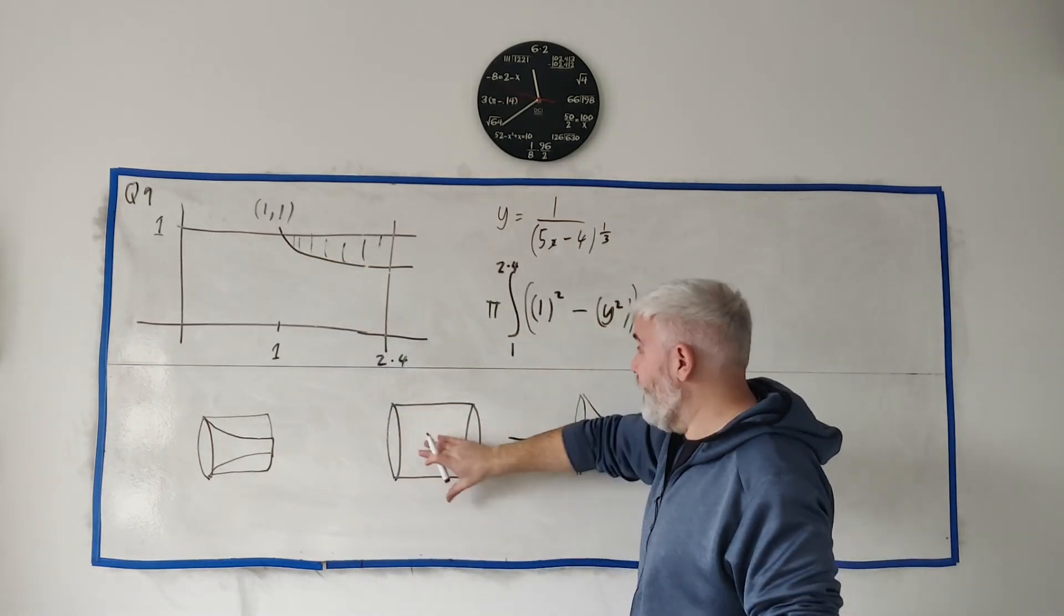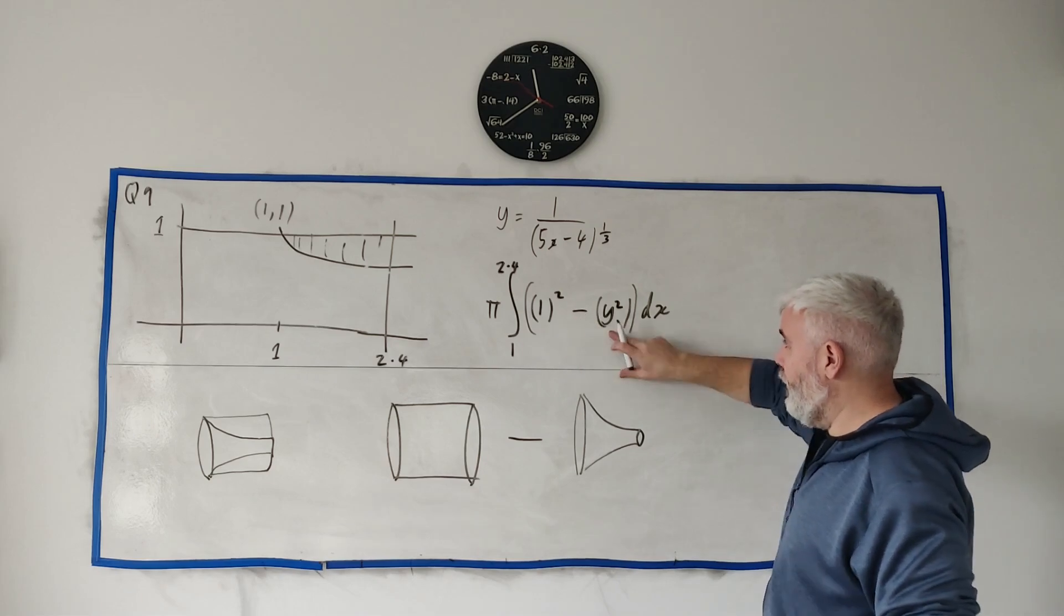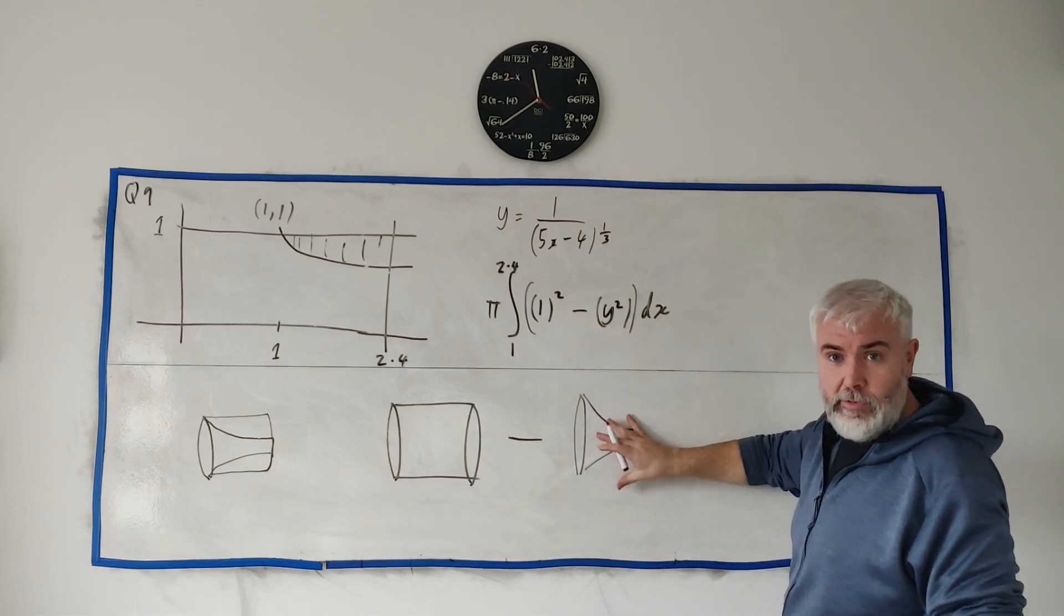And we'll be left with the one we're looking for. Now we can do that just like you see here - integrate over 1 because that's what this line is here, and we get this area. Take away, integrate over the y squared, and we get this area.